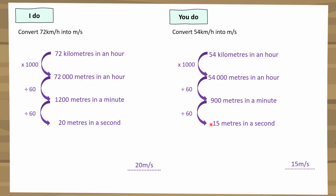As you start to do these, you might realise you can skip a step and go straight from hours to seconds. How many seconds are in an hour? If I divide by 60 twice, it's the same thing as dividing by 3,600. So if you want to do that step of going straight from hours to seconds, you can. But I find it easier to go from hours to minutes and minutes to seconds, because it's easier to remember to divide by 60 twice than to divide by 3,600.